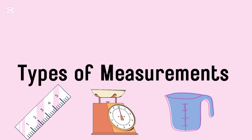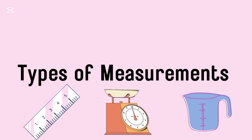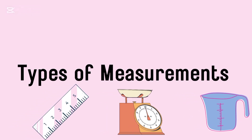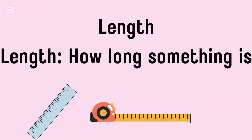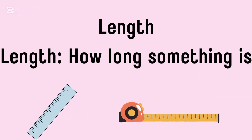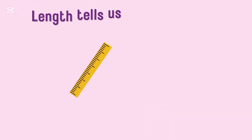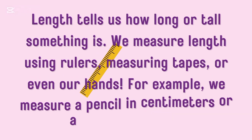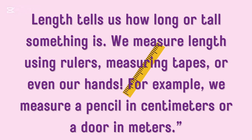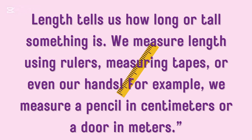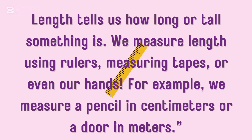Types of measurements. First is length. Length tells us how long or tall something is. We measure length using rulers, measuring tapes, or even our hands. For example, we measure a pencil in centimeters or a door in meters.